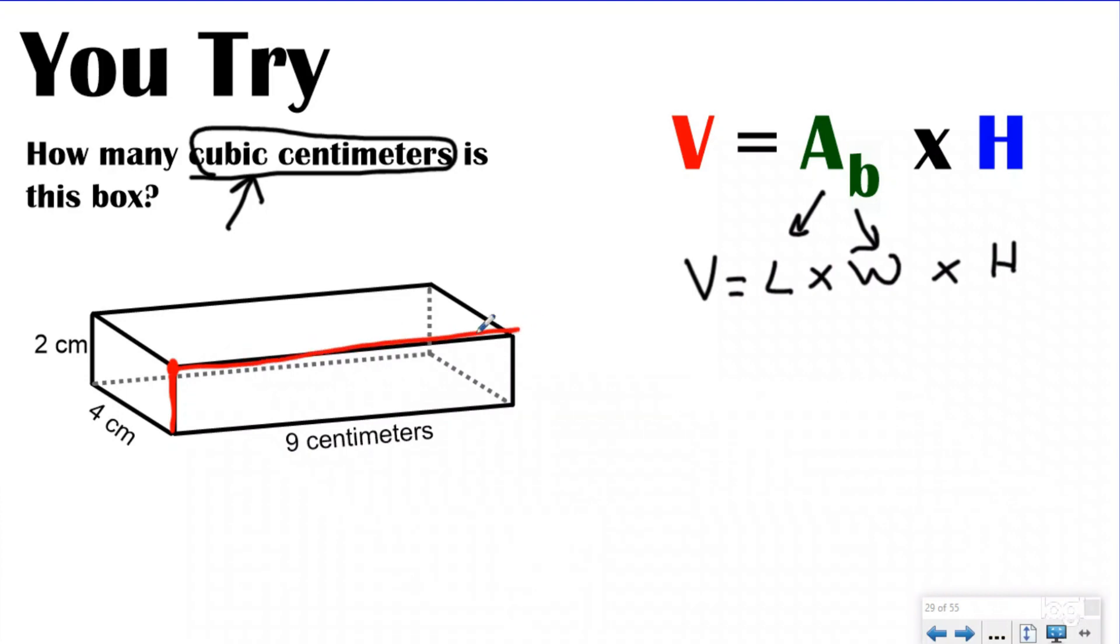and I can find the width all from the same spot. Again, that's not something you have to do, it just helps me stay organized. So my length, I don't have a number right here, but I look opposite parallel. That was nine centimeters. So my length is going to be nine centimeters. My width,